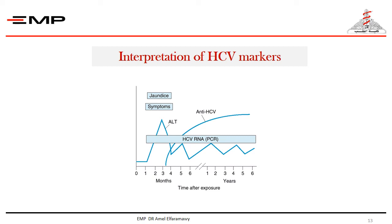HCV IgG crosses the placenta, so testing by HCV IgG is not informative until the infant is 18 months old. Percutaneous liver biopsy should be considered in chronic cases to detect the degree of fibrosis and histological activity index.